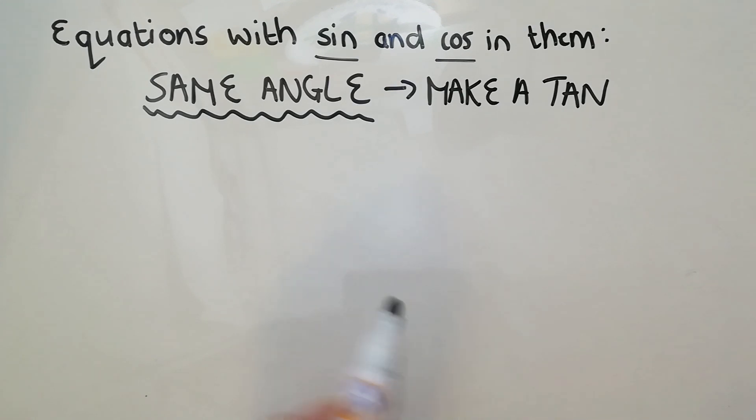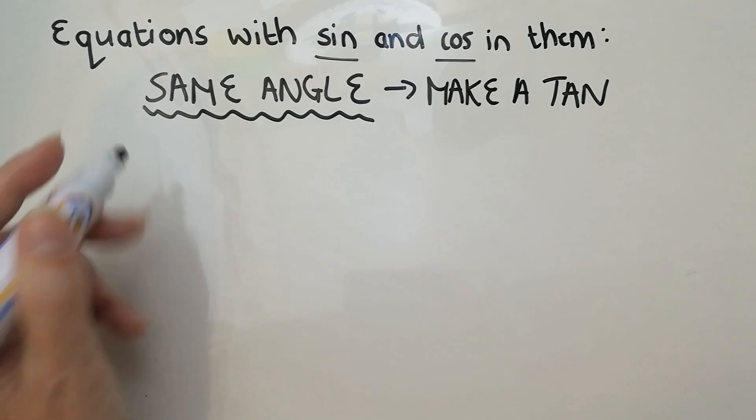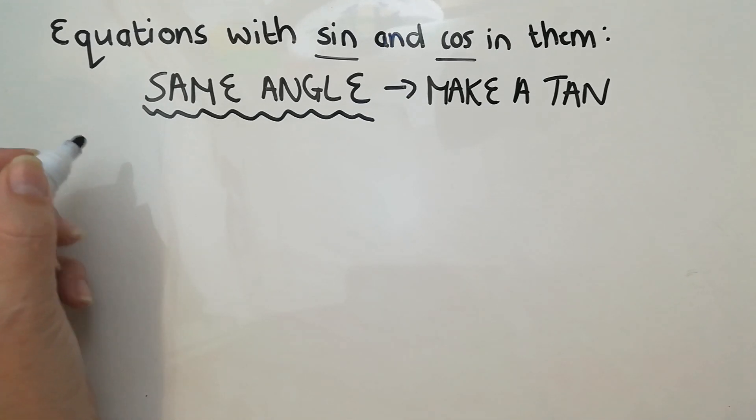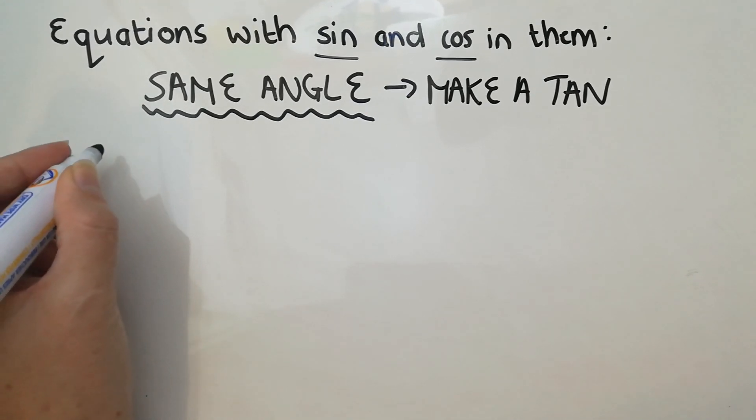Now this is not saying that every time you see a sine and a cos in the same question, you're going to make a tan. There's another type that's a main type, and you could also find them in factorizing questions.